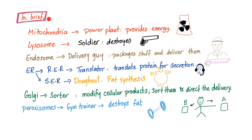Here are the organelles and their functions. Mitochondria is the powerhouse. Lysosome is the soldier. Endosome is the delivery guy. Rough endoplasmic reticulum is the translator — it's also the Uber. Smooth endoplasmic reticulum is the donut. Golgi is the sorter. Peroxisomes are the gym trainers.